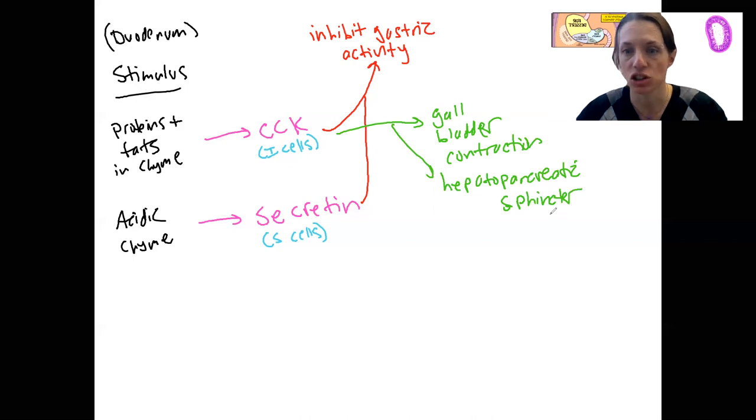Opening, relaxation. Relaxation is going to promote opening. We also have acinar cell secretion. What do those things secrete? Digestive enzymes from the pancreas. Pancreatic enzymes.